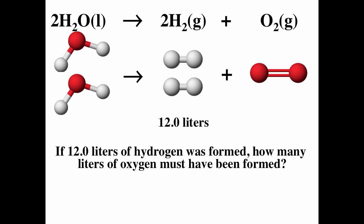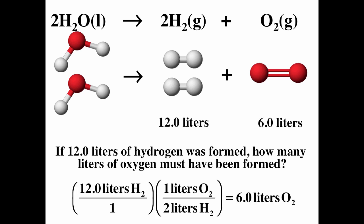If 12 liters of hydrogen was formed, how many liters of oxygen must have been formed? According to ideal gas law, all that matters is the number of gas particles, and the volume is directly proportional to n with everything else held constant. According to this reaction, two moles of H2 gives us one mole of O2 — you can also think of it as two liters of H2 corresponding to one liter of O2. So 12 liters of H2 divided by two gives us six liters of O2.